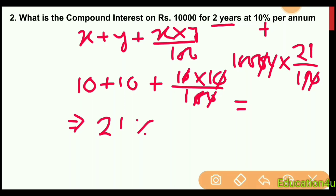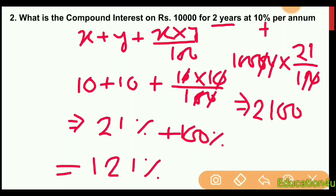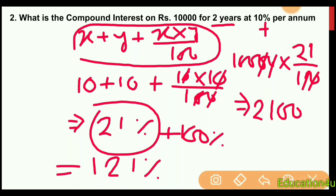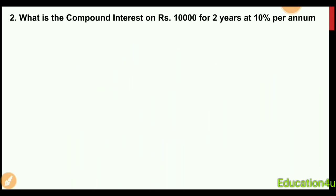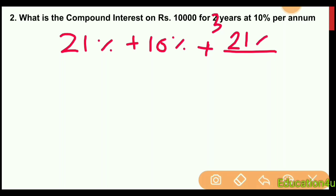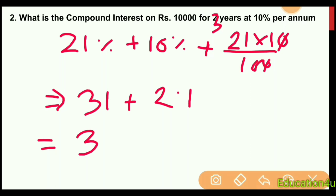We calculate 10 plus 10 plus 10 into 10 divided by 100, which gives us 21 percent. Then 21.1 percent on the principal amount gives 33.1 percent. For compound interest, the rate is 1.21 times the original, so the final answer is based on this calculation.